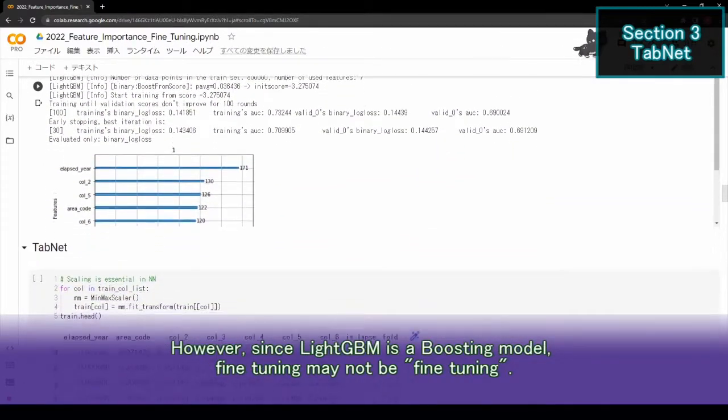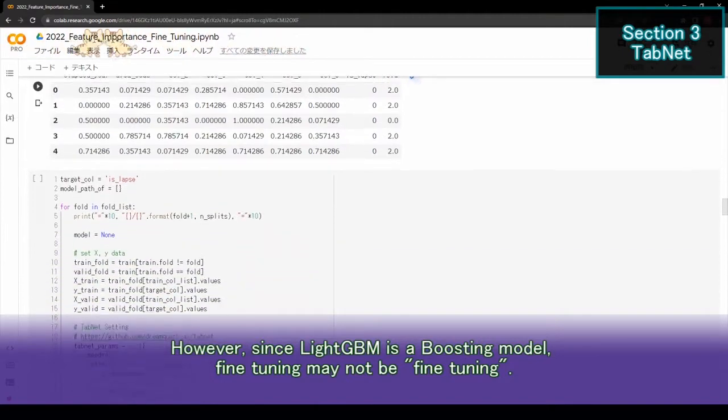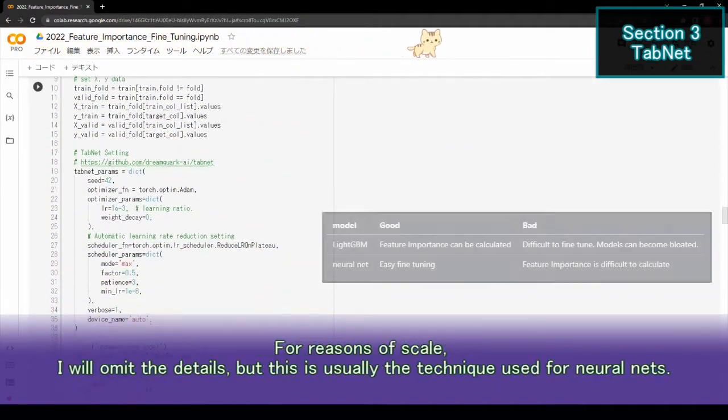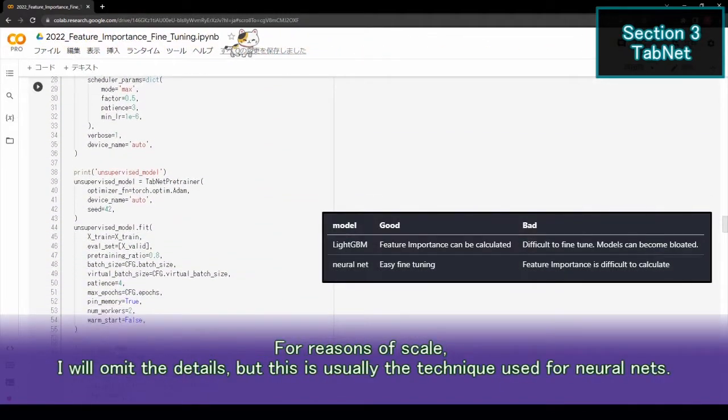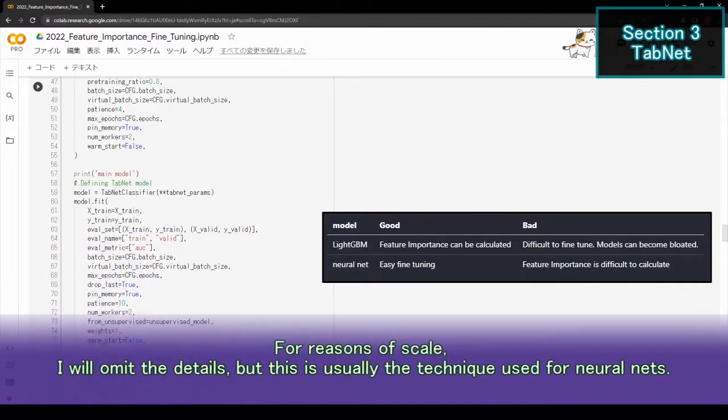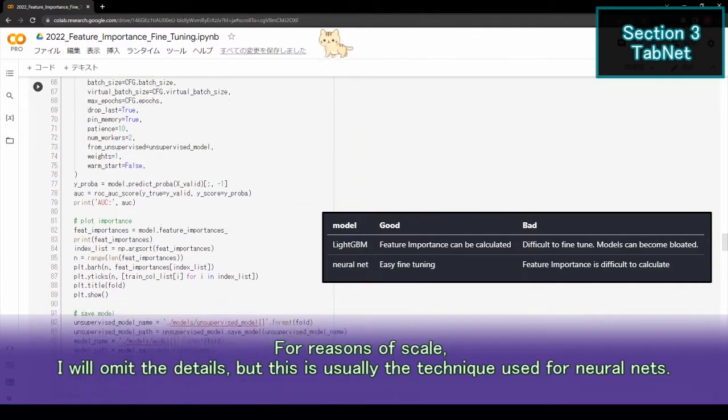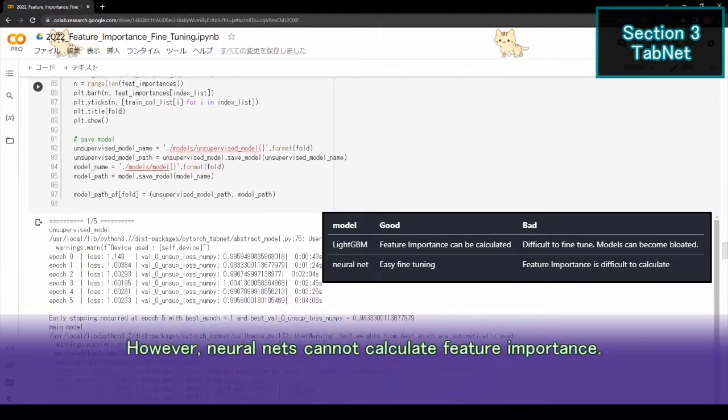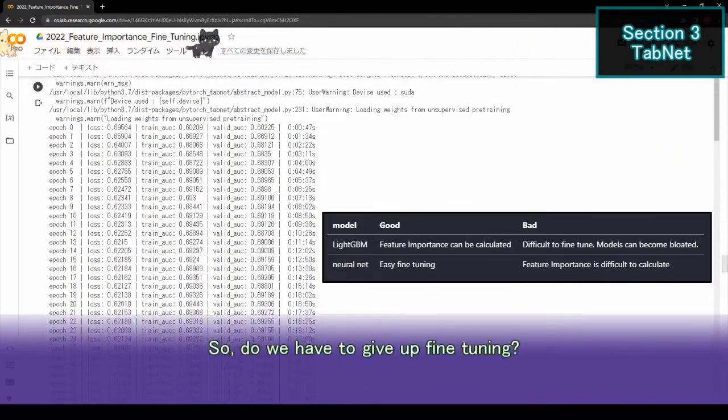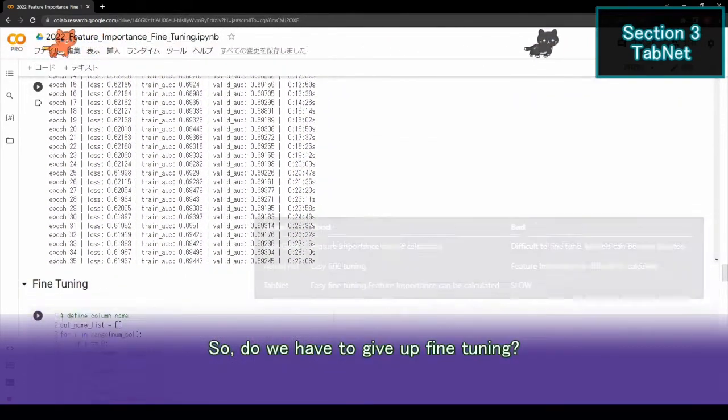However, since LightGBM is a boosting model, fine-tuning may not be fine-tuning. For reasons of scale, I will omit the details, but this is usually the technique used for neural nets. However, neural nets cannot calculate feature importance. So, do we have to give up fine-tuning?